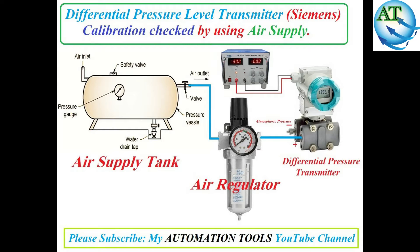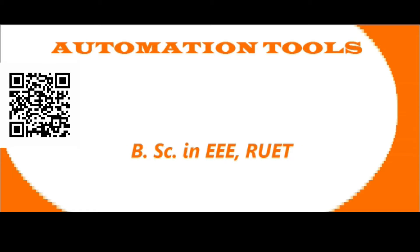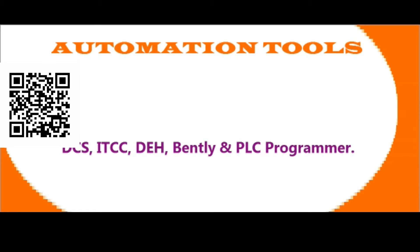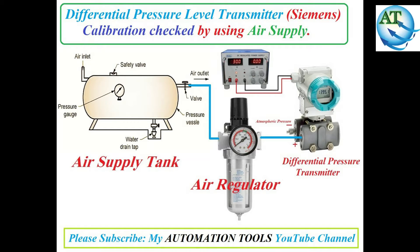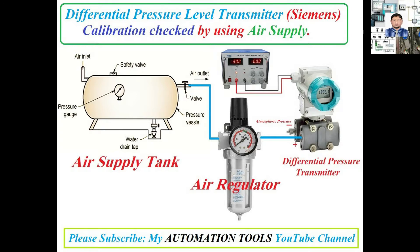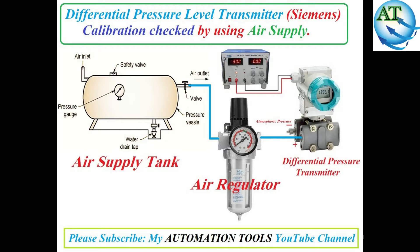Hello dear viewers, Assalamualaikum. I am Engineer Mohamad Rezaul Har from the Automation Tools YouTube channel. We know in industrial automation systems, different types of transmitters are used to measure the level of a tank, vessel, etc. Siemens differential pressure level transmitters are the most usable of them.